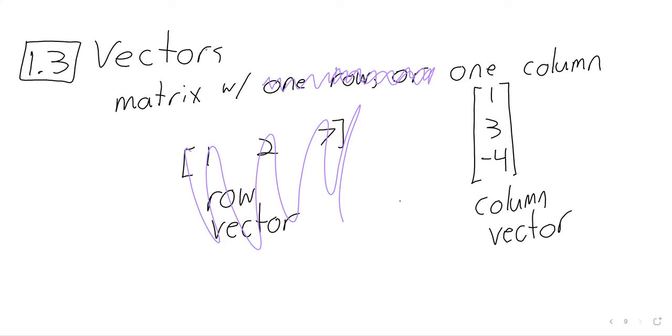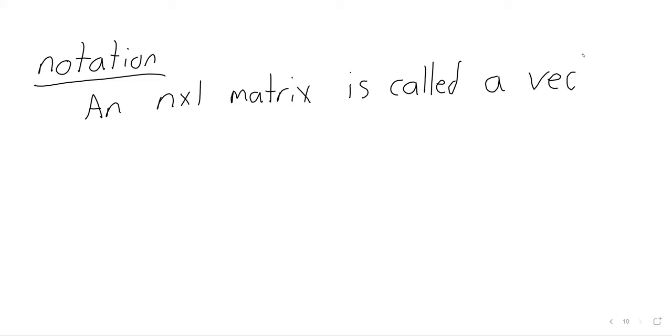Because we think of them as being their own thing, they get their own notation. An n by one matrix, that is to say a column vector, this matrix with only one column, is called a vector in R^n.